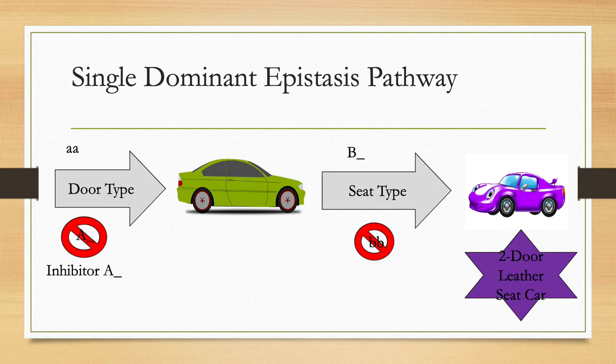If a big A or four-door car gene is donated instead, the car wouldn't be able to be produced. Only the two-door cars will move down the assembly line, which is denoted by little A, little A.